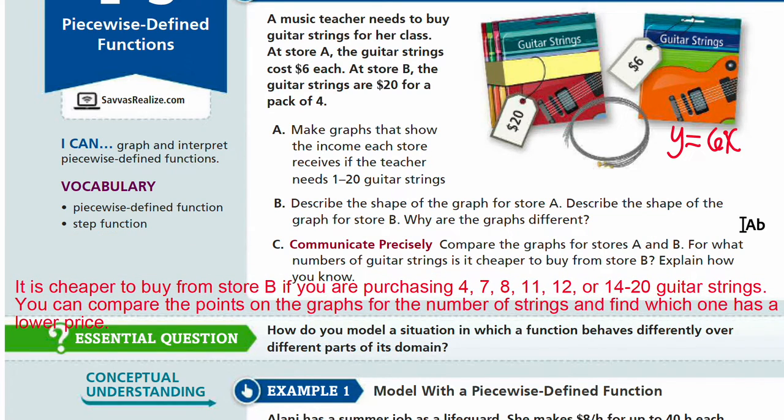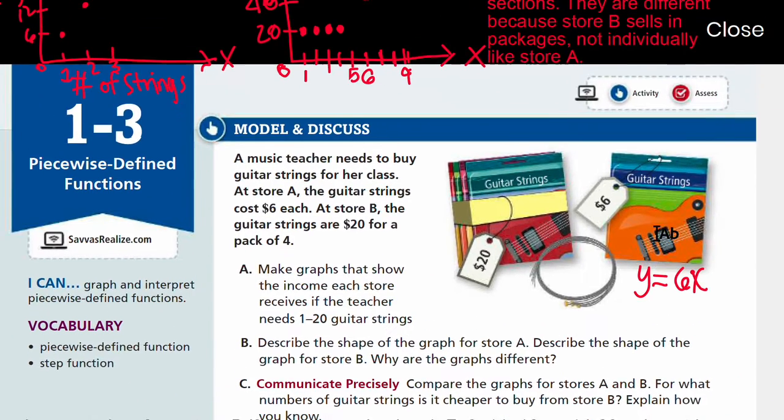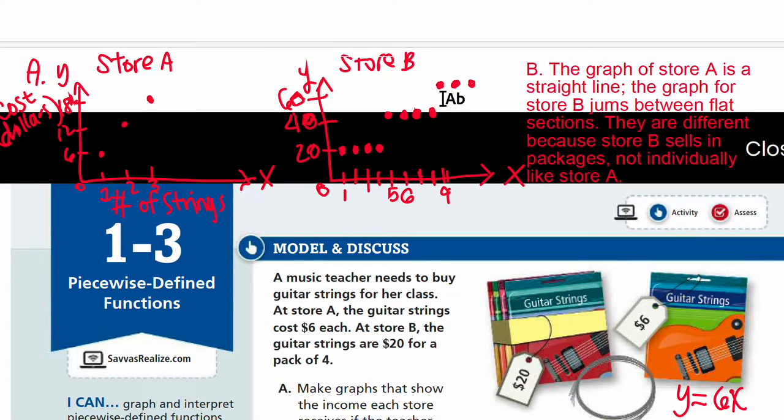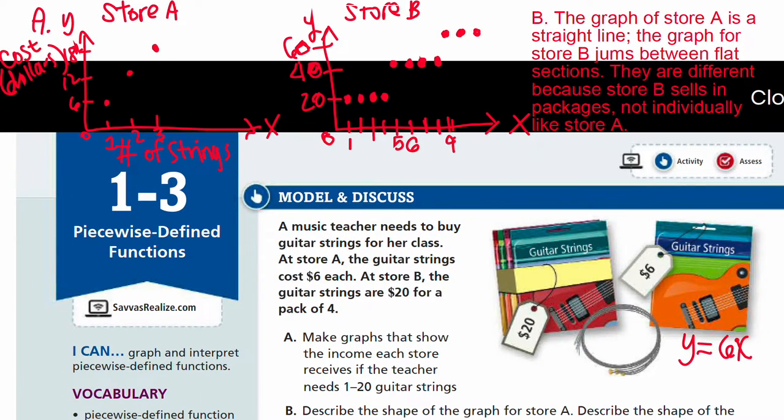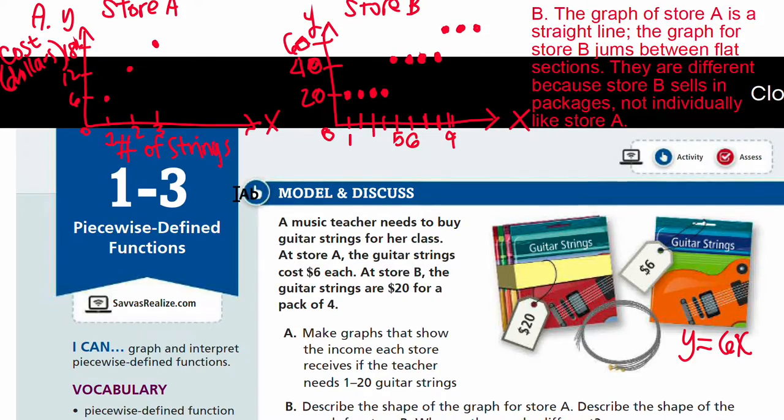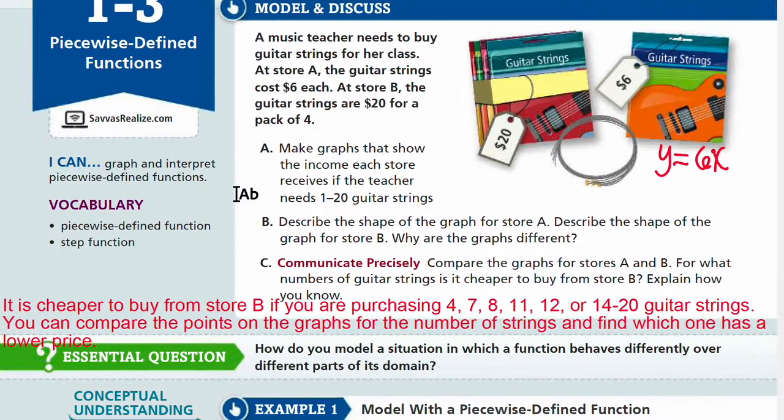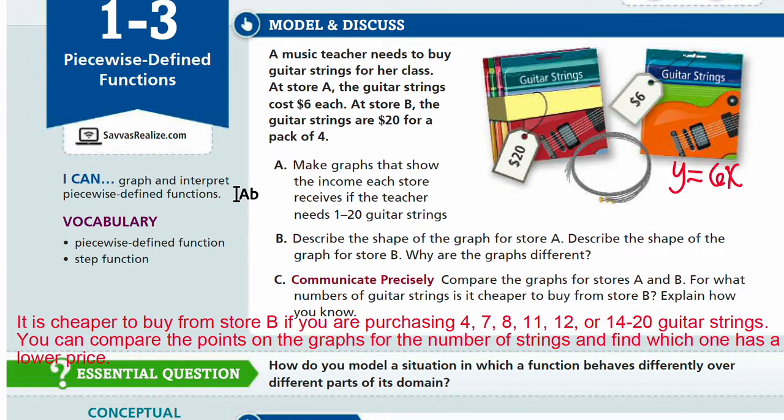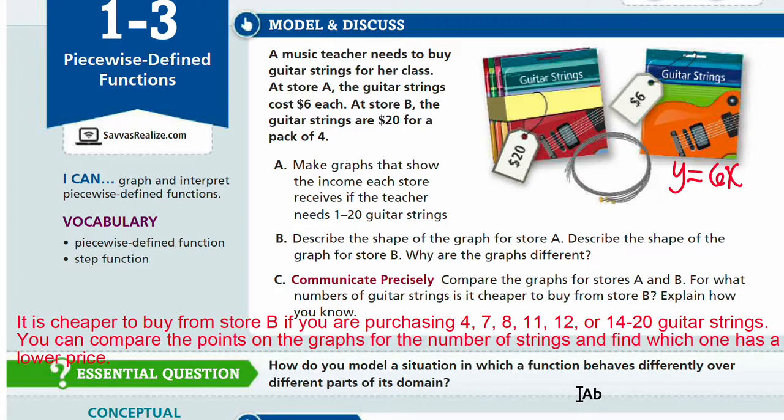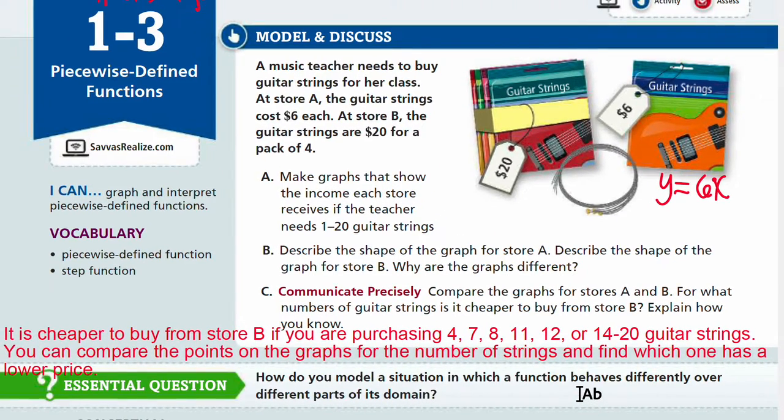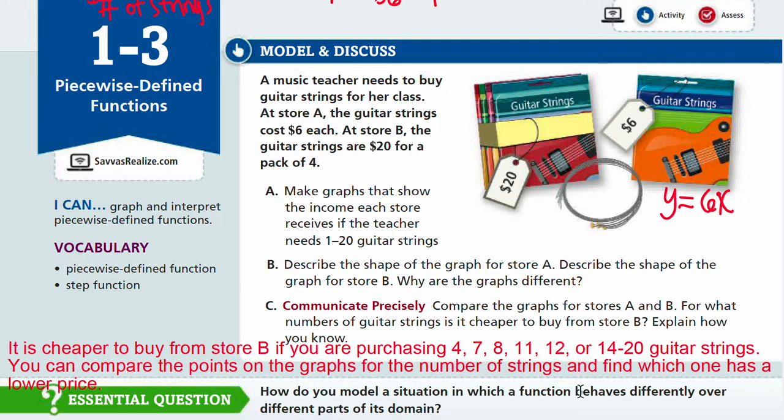There we go. All right, so Store B, the graph of Store B, is something called a step function, and it's a part of piecewise-defined function. So we have a question we'll answer throughout this lesson: how do you model a situation in which a function behaves differently over different parts of its domain? So we're going to look at examples of piecewise-defined functions in the next videos. See you in the next video. Bye.